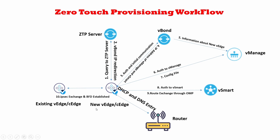By default, the new vEdge reaches out to the ZTP server at ztp.viptela.com. It sends its query to the ZTP server, which has the vBond IP corresponding to that vEdge's serial number, and returns the vBond IP to the new vEdge.